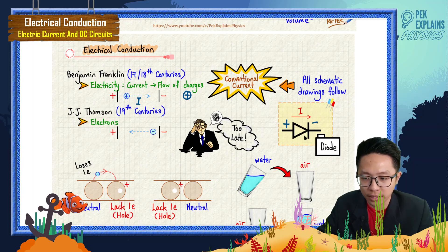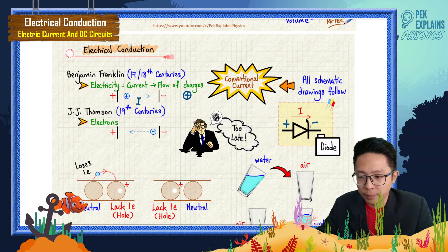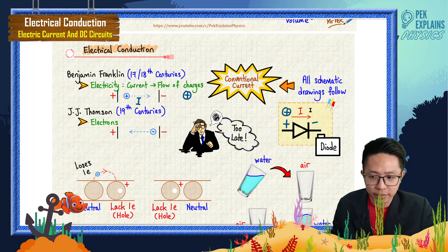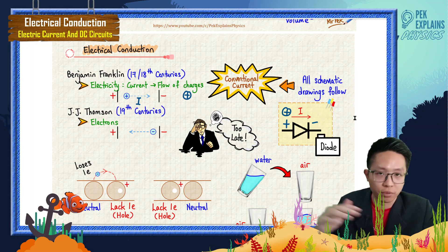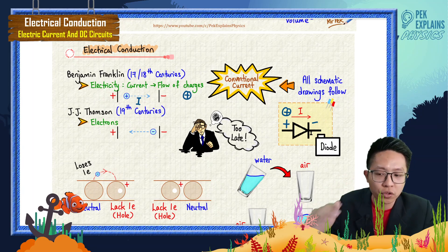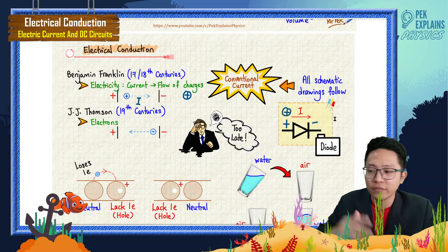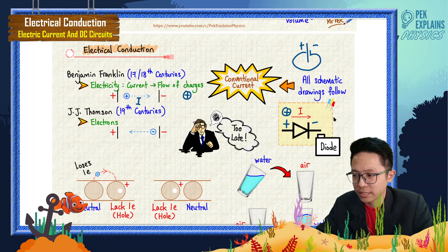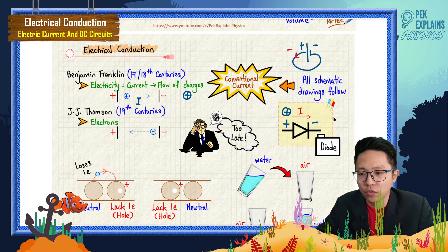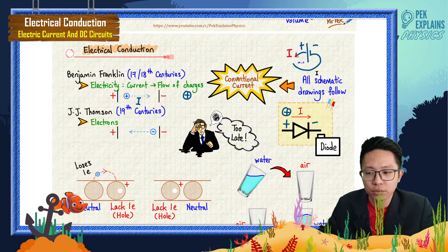For example, take the diode: this is the anode and this is the cathode. The conventional current flows from the anode to the cathode, and you can see the arrow in the diagram is drawn in that direction to follow the flow of positive charge. Even our battery is drawn in such a way to support the idea that current flows from the positive terminal to the negative terminal.